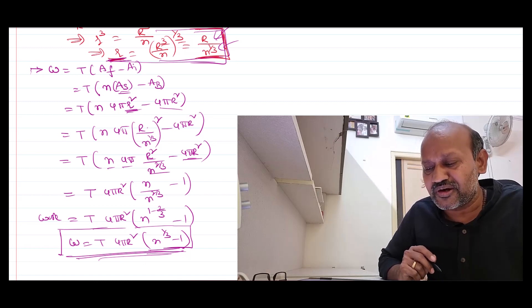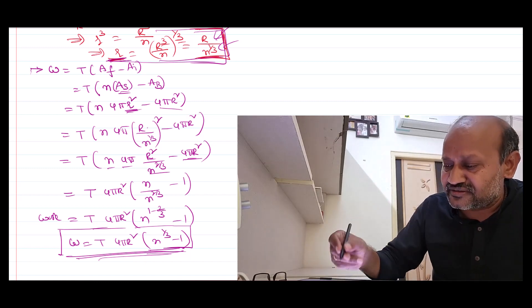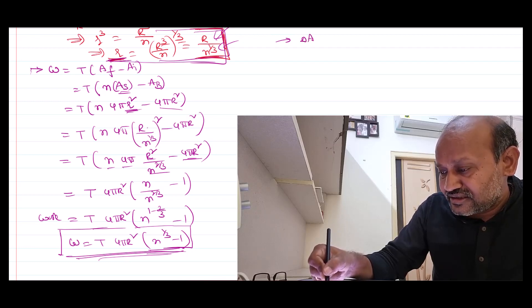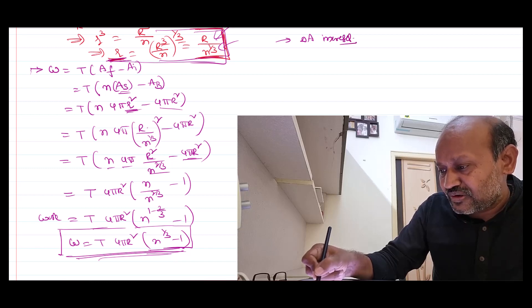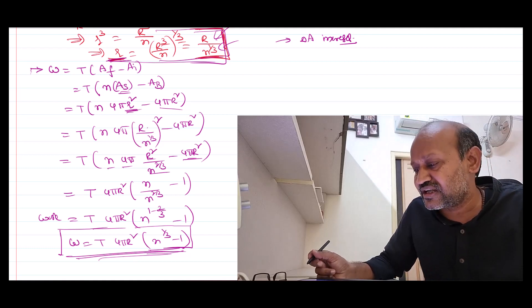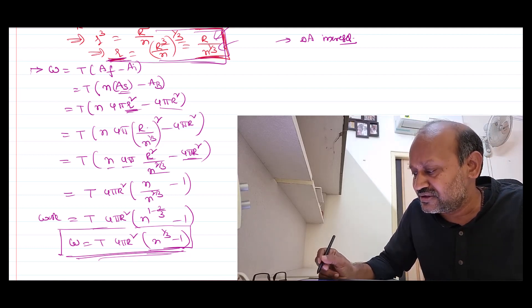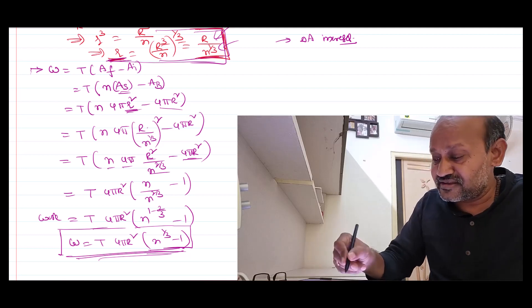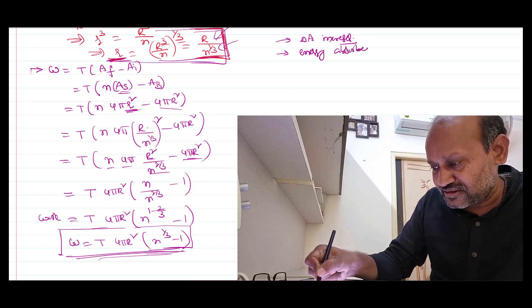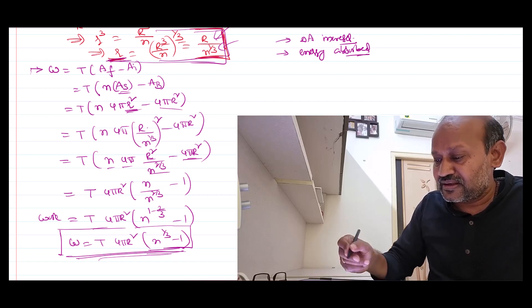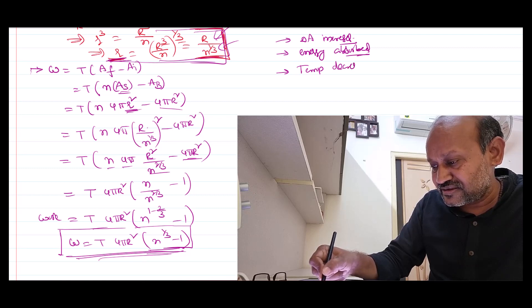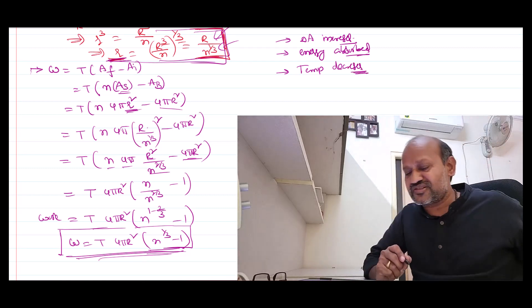There are important points to understand. When a big drop splits into small drops, the surface area increases. Energy is absorbed — we supply energy to the system. Therefore, the energy is absorbed, and as a result, the temperature of the system decreases. These are the key points to remember.